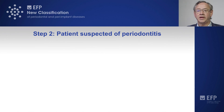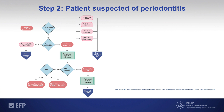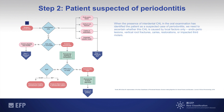After step one, when we have a patient that is suspect of having periodontitis, we move to step two. In this step two, the presence of interdental clinical attachment loss in the oral examination has identified this particular patient as suspect of periodontitis.